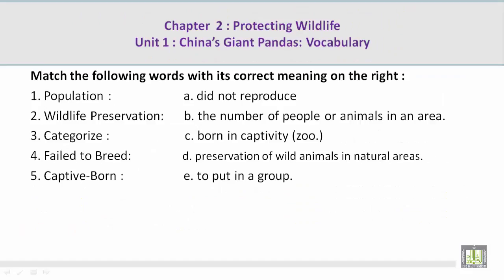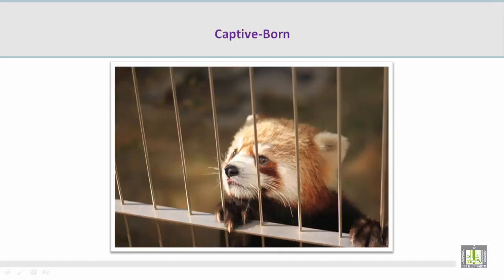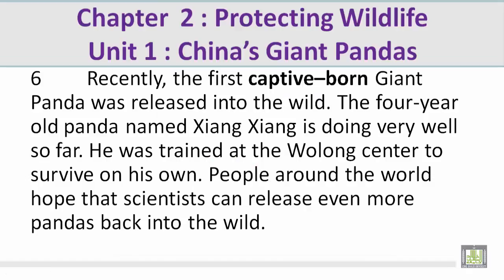Number 5: Captive born. Mohamed, please give us the correct meaning on the right. C. Born in captivity, like a zoo. Now let's take a look at a picture related to the vocabulary word captive born. Mohamed, please tell us how this picture is related to captive born. As you see in this picture, there's a baby panda born in captivity, which is in the zoos. You see this baby inside a cage, and the cage is always in the zoos. And that's what captive born means. Recently, the first captive-born giant panda was released into the wild.